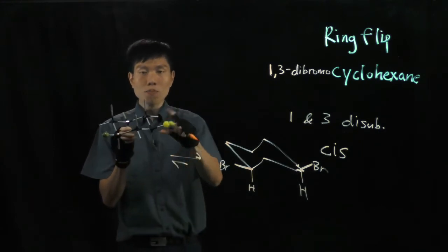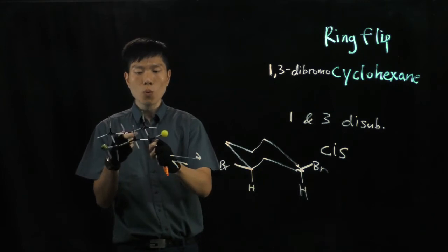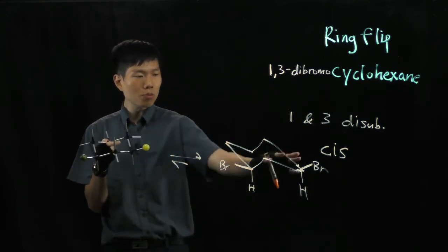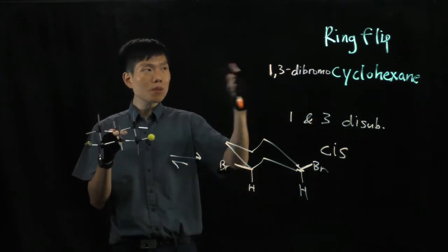Now in this case, both bulky groups here do not have a 1,3-diaxial interaction because they're facing out. So this is more preferred. So let's do a ring flip back again.